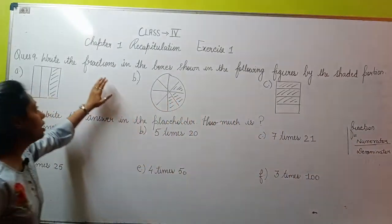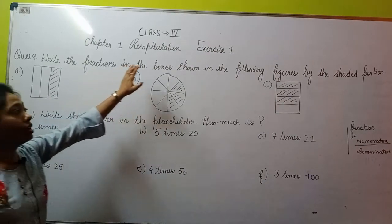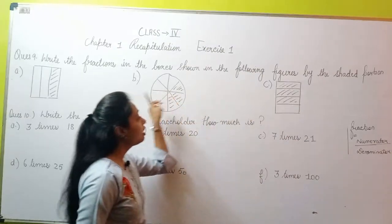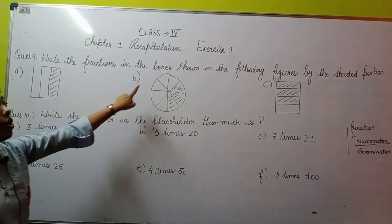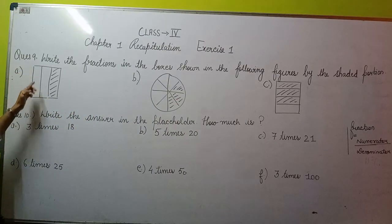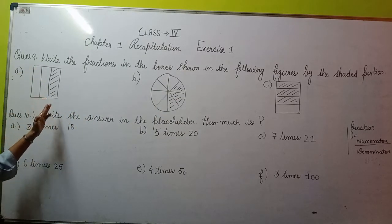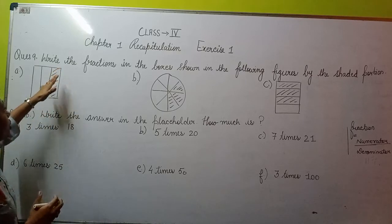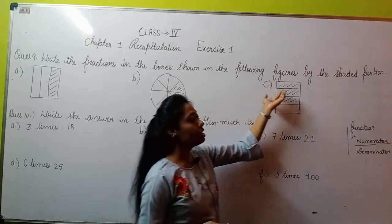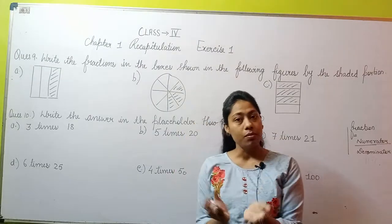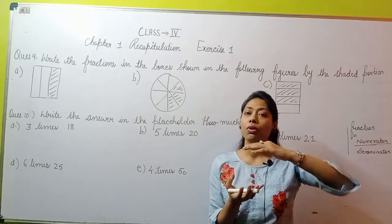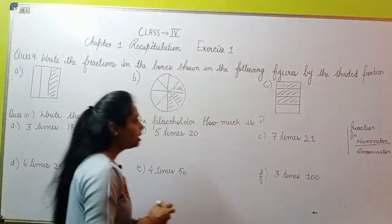Here you need to write the fractions from the following figures. You have three figures given here: A, B, and C. In all three figures, the figure is divided into parts. Some parts are shaded, some are not. You need to see what fraction represents this. Count the total parts and write that as the denominator, then count how many parts are shaded and write that as the numerator.